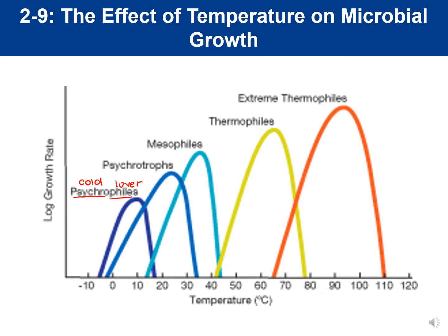A psychrotroph — 'psychro' meaning cold, 'troph' meaning eater — still prefers cold temperatures but grows in a warmer range than a psychrophile. A psychrotroph grows from around 0°C minimum, up to just below human body temperature, with an optimal peak around room temperature. These organisms grow at room temperature and at refrigeration temperature (~5°C), but do not grow well at human body temperature.